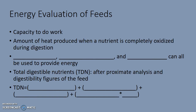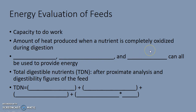Energy evaluation of feeds. Energy, remember, is the capacity to do work — that's a physics definition. And in the context of nutrition, it's the amount of heat produced when a nutrient is completely oxidized during digestion. Carbohydrates, fats, and proteins can all be used to provide energy.